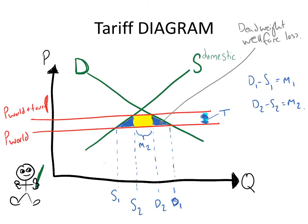You also see a yellow box in the middle. That is represented as M2, which is demand 2 minus supply 2 times the tariff. This is your government revenue.